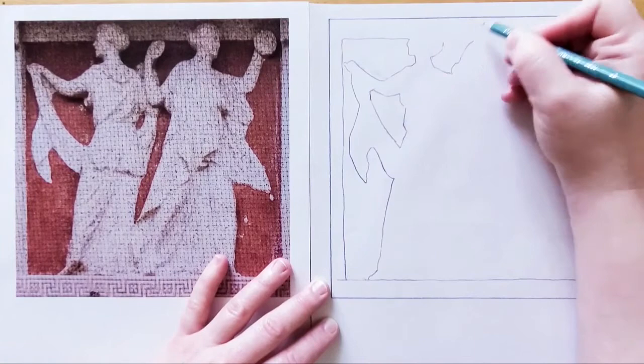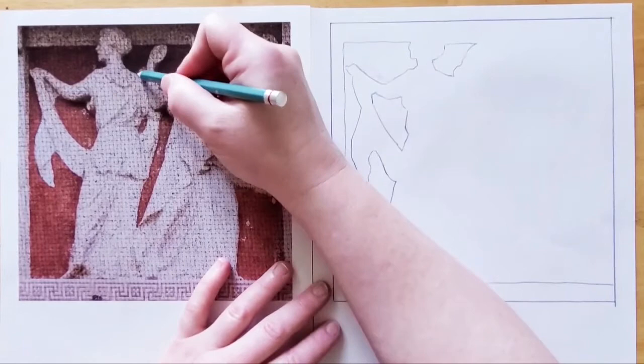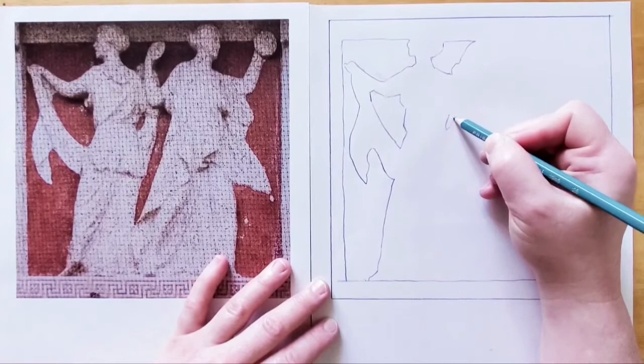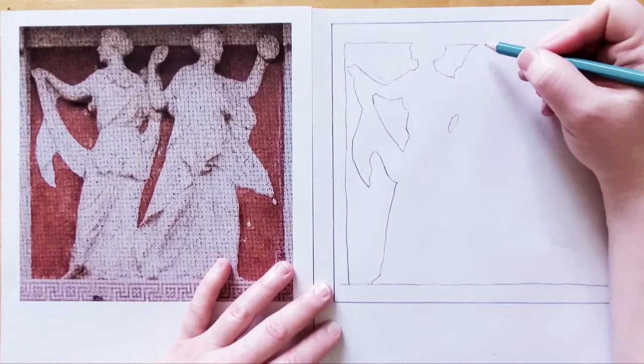Now let's get the tiniest pocket of negative space, that little gap between her waist and her scarf. How do we know where to put it? Look at how it lines up with what we've already drawn. Now for the next section.